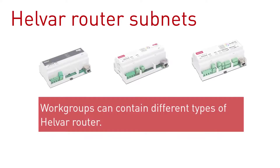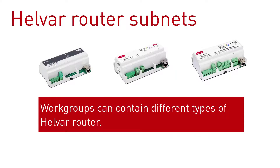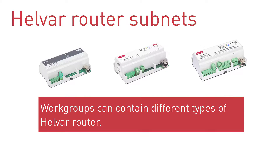Remember, a workgroup can contain different types of Helvar routers. So, for example, a workgroup could have some 920s, several 910s, and a 905. You don't have to have the same type of router within a workgroup, as long as they're Helvar routers.